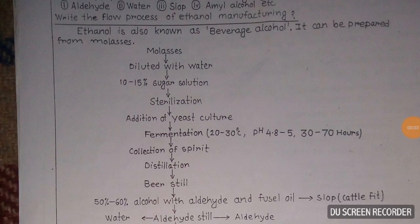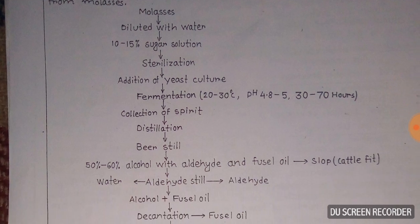Ethanol, also known as beverage alcohol, can be prepared from molasses. First, molasses is taken and diluted with water, then a 10 to 15 percent sugar solution is added. The mixture is then sterilized, followed by the addition of yeast culture.